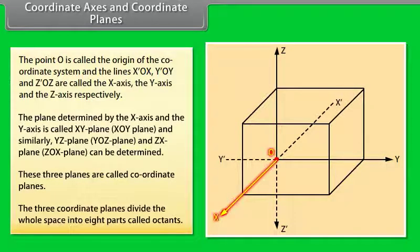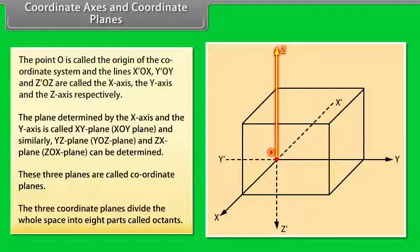These three planes are called coordinate planes. The three coordinate planes divide the whole space into eight parts called octants.